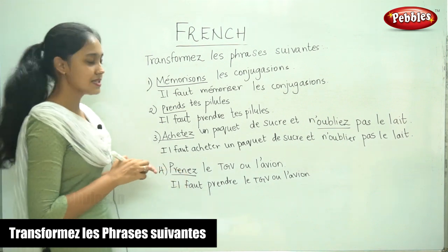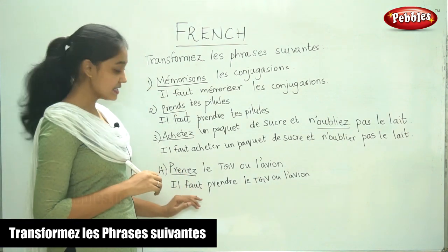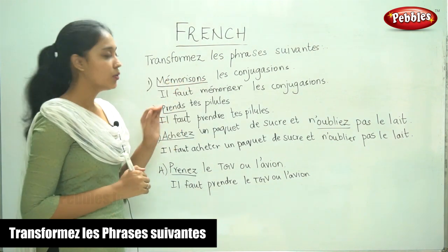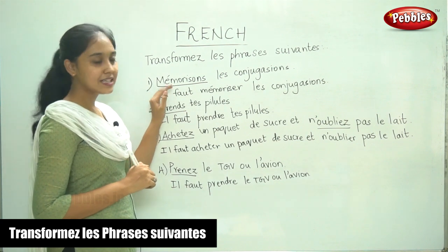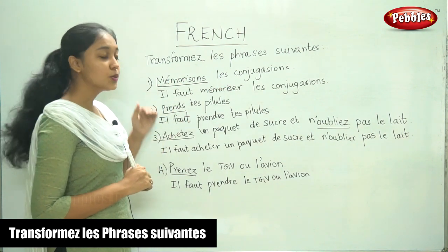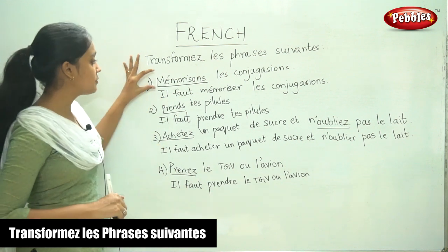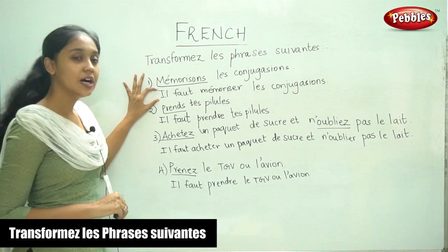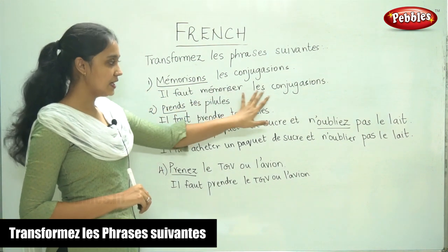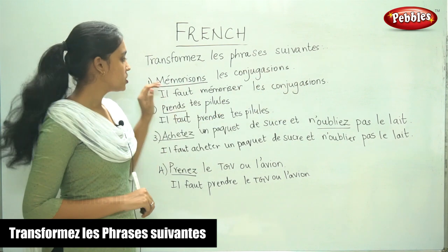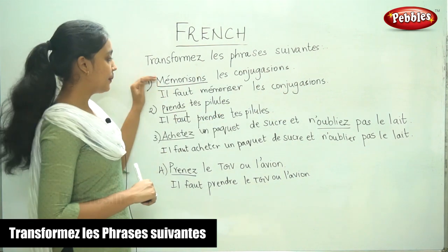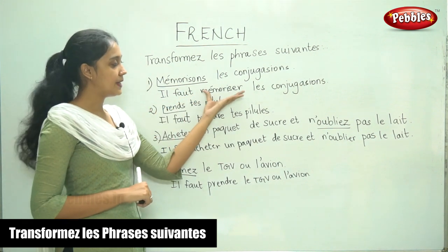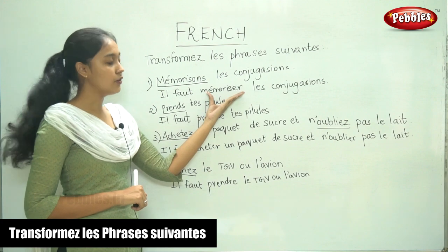So, this is a simple exercise where you replace the verb, which is conjugated, with il faut plus the infinitive form of the verb. By doing this, we change the sentence from an order — that is the imperative — to an obligation. Il faut mémoriser les conjugaisons. To change the sentence from the imperative to an obligation form, we put il faut plus the infinitive of the verb.